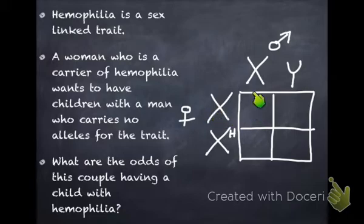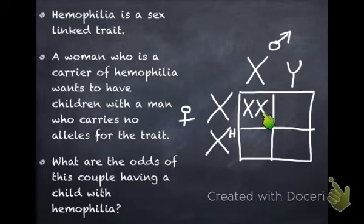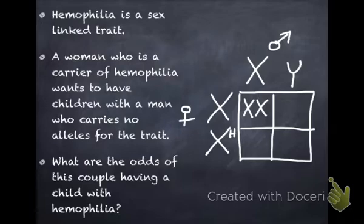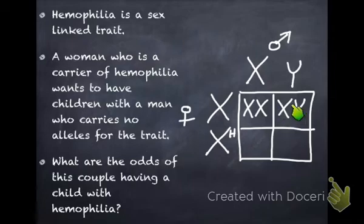Now let's do the cross. Mom could make an egg cell with her normal X chromosome, and dad could contribute a sperm with his X chromosome — producing a child with two X chromosomes, which means she's female, and she didn't get the hemophilia X, so she'd be a normal healthy girl. We could also get a normal healthy boy who got mom's normal X chromosome and dad's Y chromosome, with no hemophilia genes.